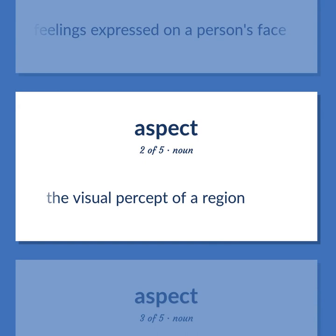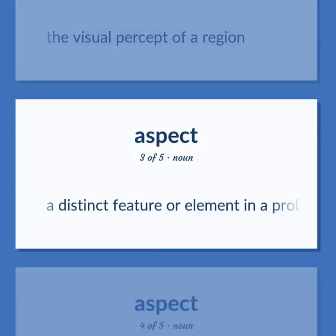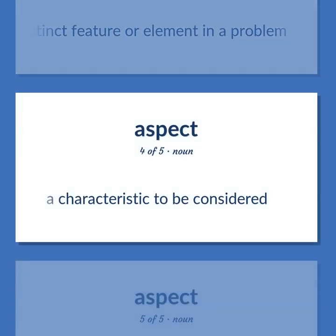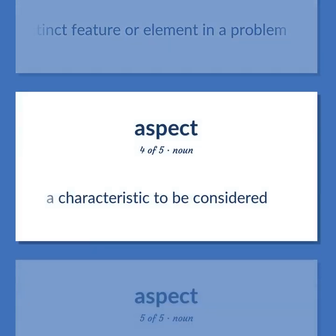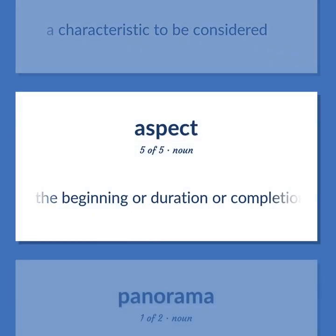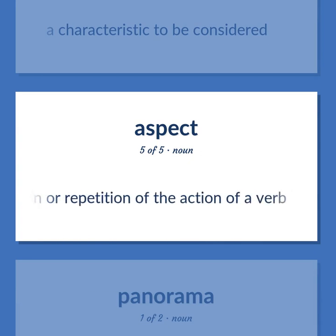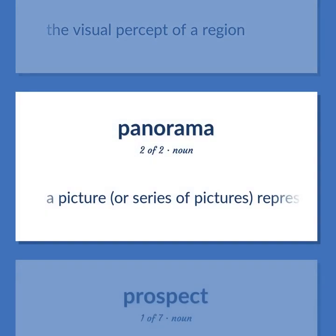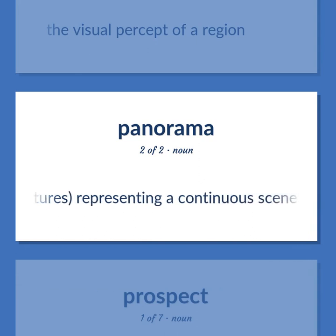Aspect: The visual percept of a region. A distinct feature or element in a problem. A characteristic to be considered. The beginning or duration or completion or repetition of the action of a verb. The visual percept of a region. A picture, or series of pictures, representing a continuous scene.